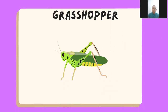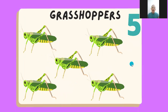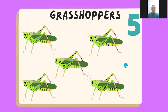What is this? This is a grasshopper — a green grasshopper. Let's count. We have one, two, three, four, and five grasshoppers. Five grasshoppers. And this is the number five.